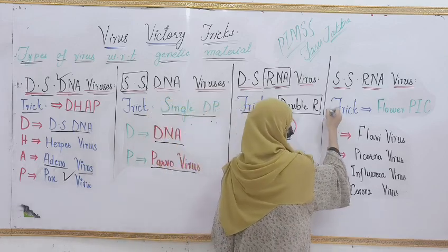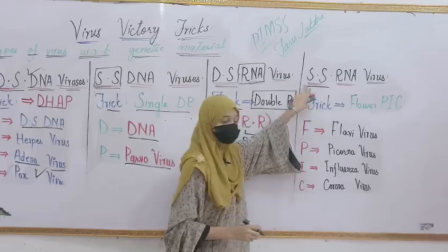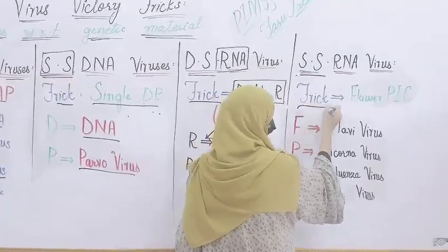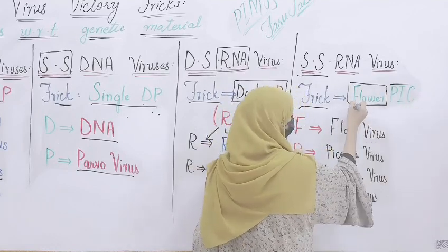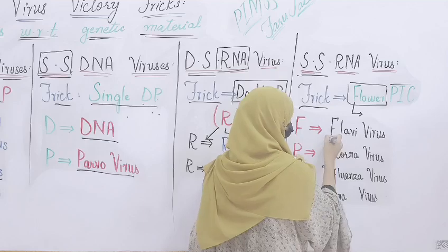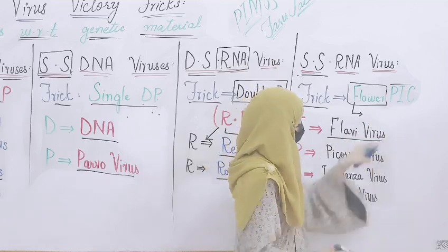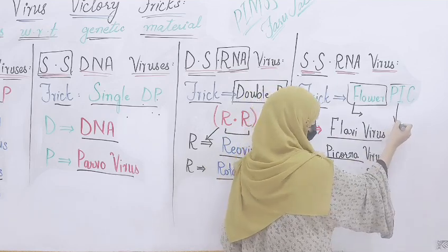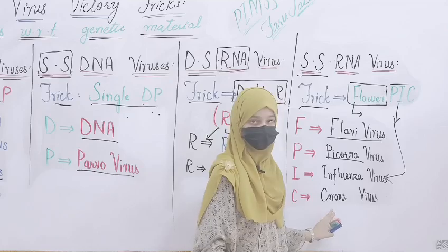And finally, the last trick is for SS RNA virus, where SS stands for single-stranded. The trick to learn this is Flower Pig: F stands for flavivirus, L stands for picornavirus, I stands for influenza virus, and C stands for coronavirus.